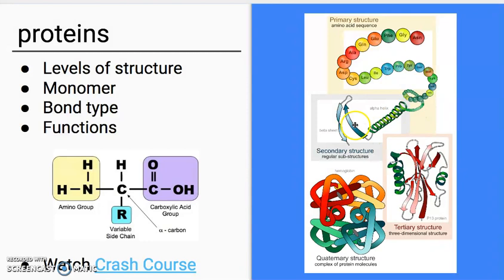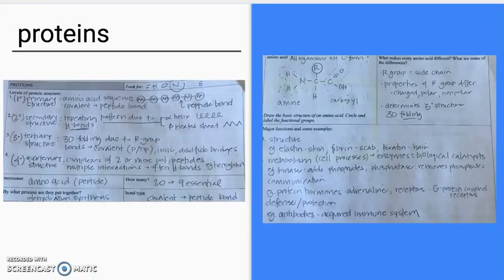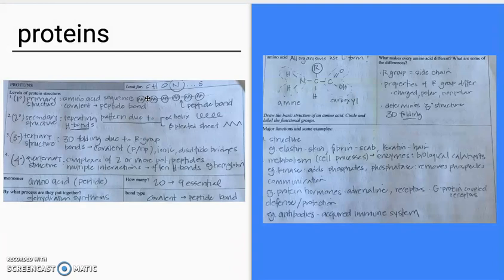The secondary structure has two different general forms. One is called an alpha helix, and the other is called a beta pleated sheet. We get alpha helices and beta pleated sheets because of what's happening at the individual peptide bonds. Each of them has nitrogen and oxygen right in close proximity to the bond, and because of the high electronegativity of oxygen and the relatively high electronegativity of nitrogen, you get partial charges at each one of these peptide bonds.